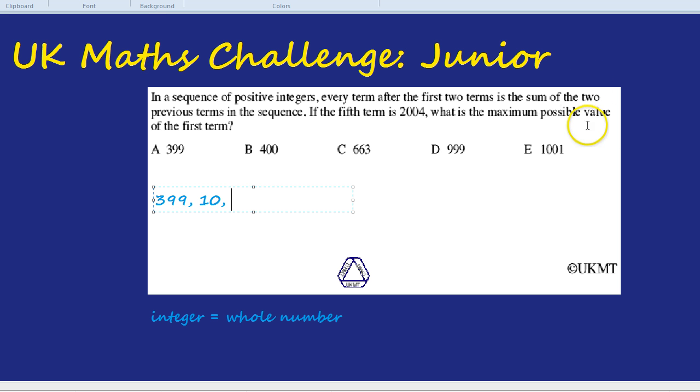In this case, the pattern is that you add the previous two terms, but it's not going to go up by the same amount each time. If those are the first two terms, adding them you get 409, then 419, then 828. But blimey, that seems like a pretty tough method to just keep guessing different numbers. How on earth would we ever narrow it down so that we could actually find out what the first term is? Because we know the fifth term is supposed to be 2004.